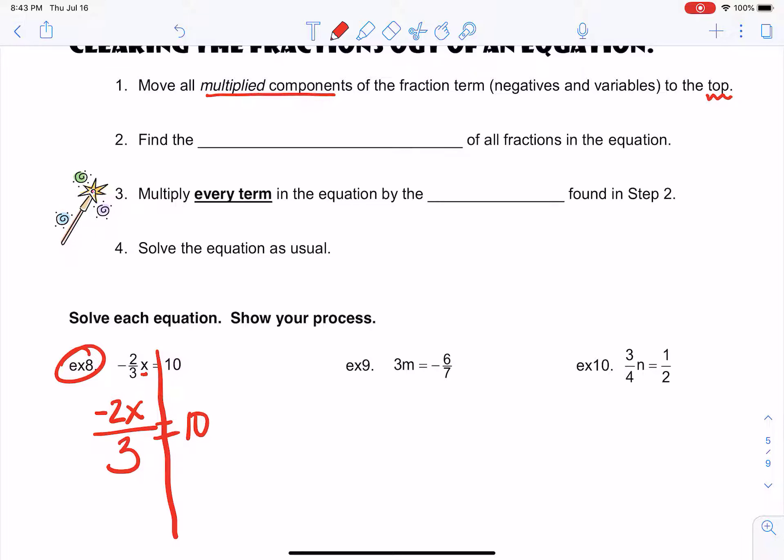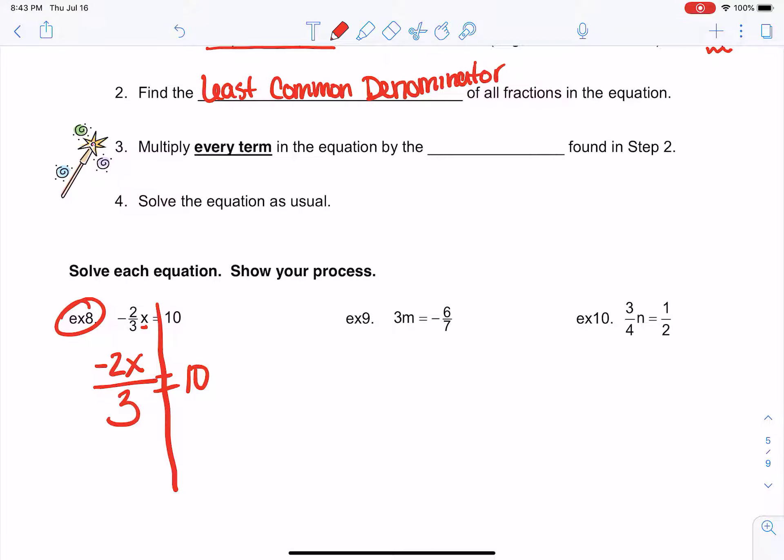Then what you need to do is if you have more than one fraction, which you won't have very often, you need to find the least common denominator of all the fractions. I promise I won't give this to you very often. But I'm going to give you an example of what that looks like in case you run into it. Then you're going to multiply every term in the equation by that least common denominator, that LCD up here.